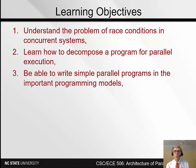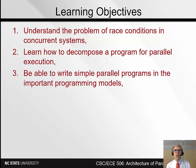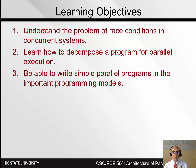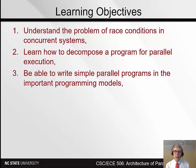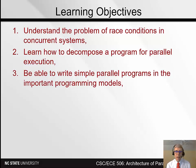The third goal is to be able to write simple parallel programs in the important programming models. There are three important models. The first is shared memory programs, where threads share memory — one can read and another can write to the same location. There's message passing, in which any data that needs to go from one process to another needs to be sent by the first process and received by the second. And thirdly, data parallel, where you have a single instruction stream but many data items being worked on at the same time — a GPU is an example of that.